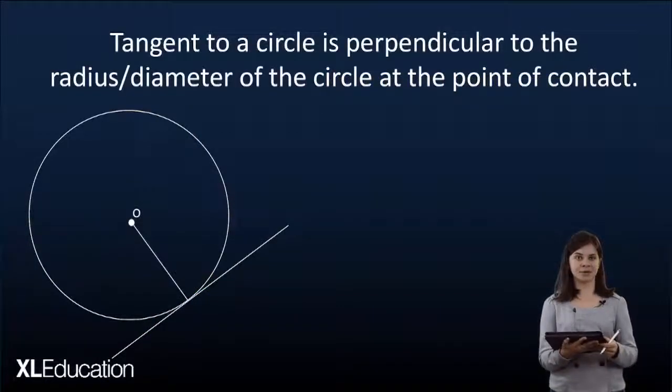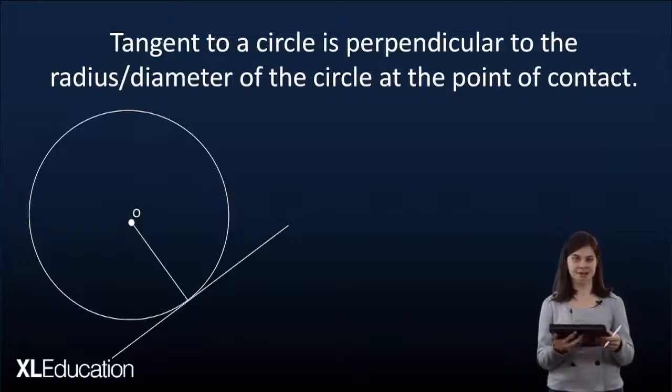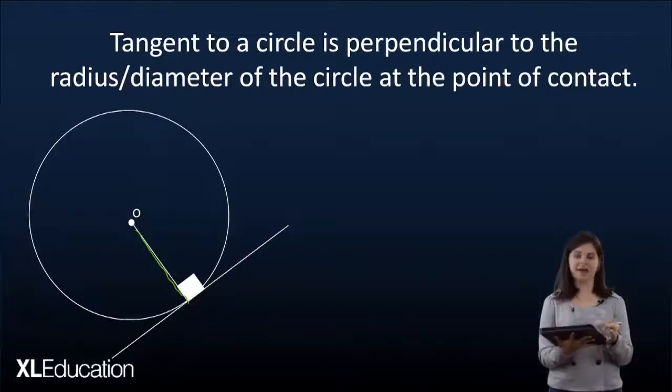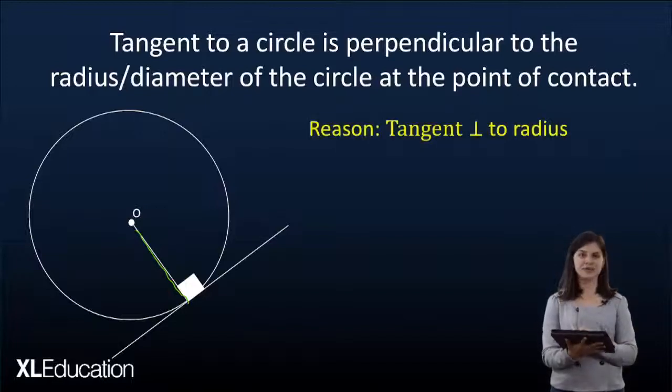The second theorem that we're going to be dealing with is the tan perpendicular to radius theorem. As we can see here we've got a tangent and we have our radius. Now the angle between the tangent and the radius will always be 90 degrees. So let's run through that.